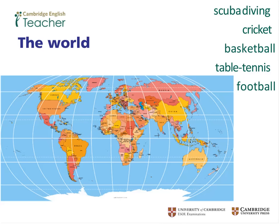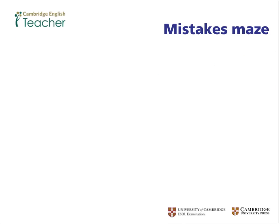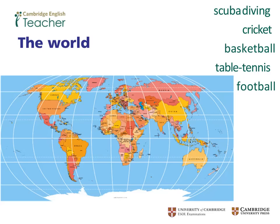Why have we chosen these five particular words? We've chosen scuba diving, cricket, basketball, table tennis, and football because they're in the course book — words we want to recycle alongside the grammar being practiced in this activity. The grammar, as we saw on the previous slide, is 'where did you put,' 'I put,' and 'why did you put' — past tense WH questions and their answers.